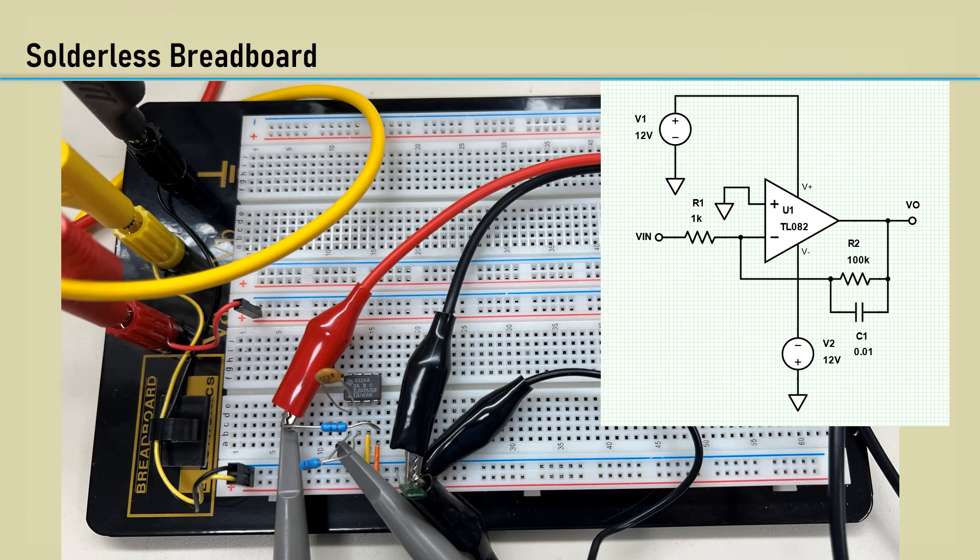Here's the solderless breadboard in the schematic. I'm using a TL082 JFET input op amp, just because I had some in my lab. It has dual 12 volt DC supplies. I also added R2 across the capacitor to help settle the output DC during frequency changes.